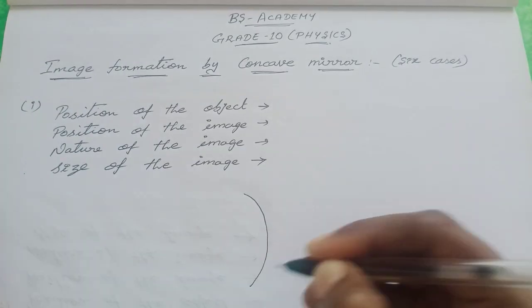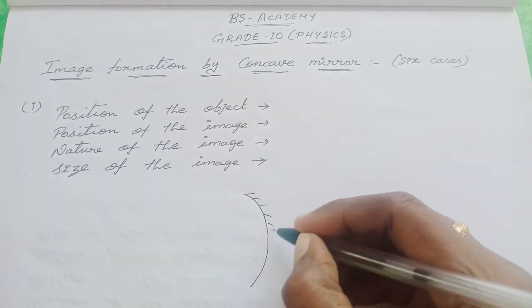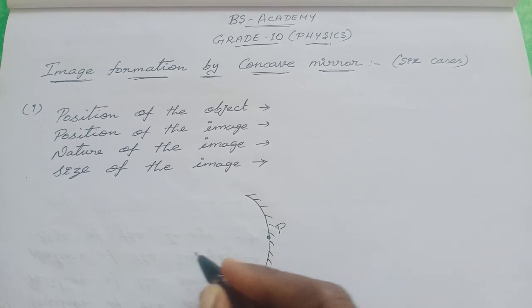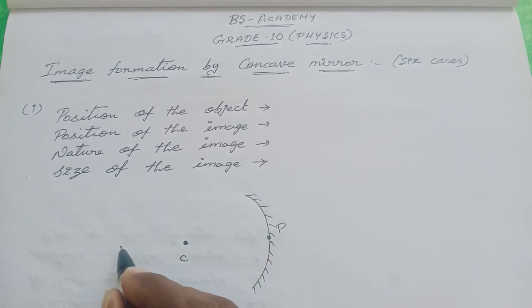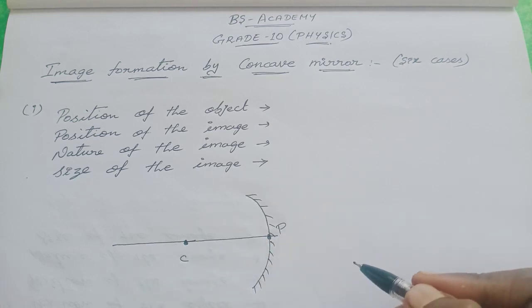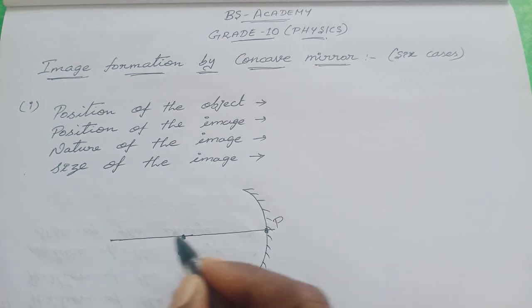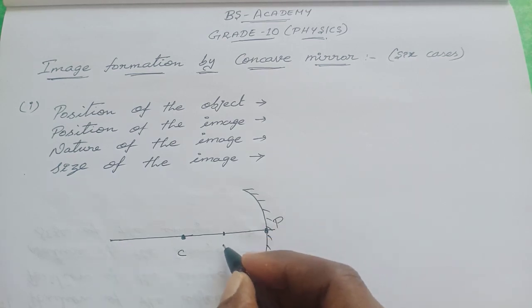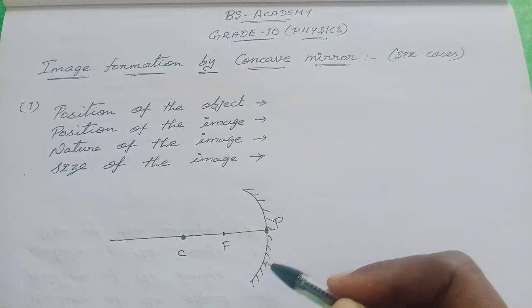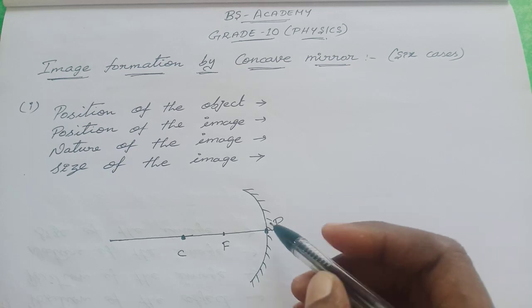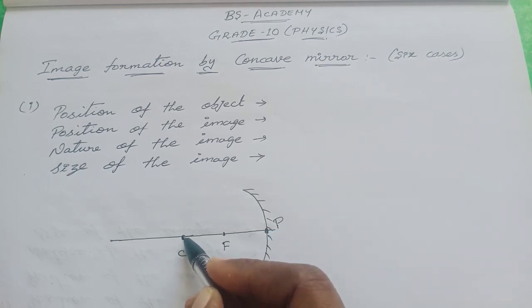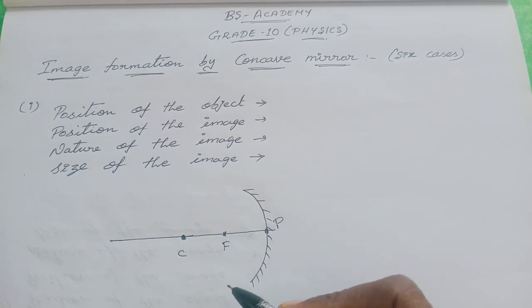We know how to draw the concave mirror. This is the concave mirror, and this is the faded part of the concave mirror. This point is called the pole, and this is the center of curvature. The line joining the center of curvature and the pole is called the principal axis. And this center point is called the principal focus.